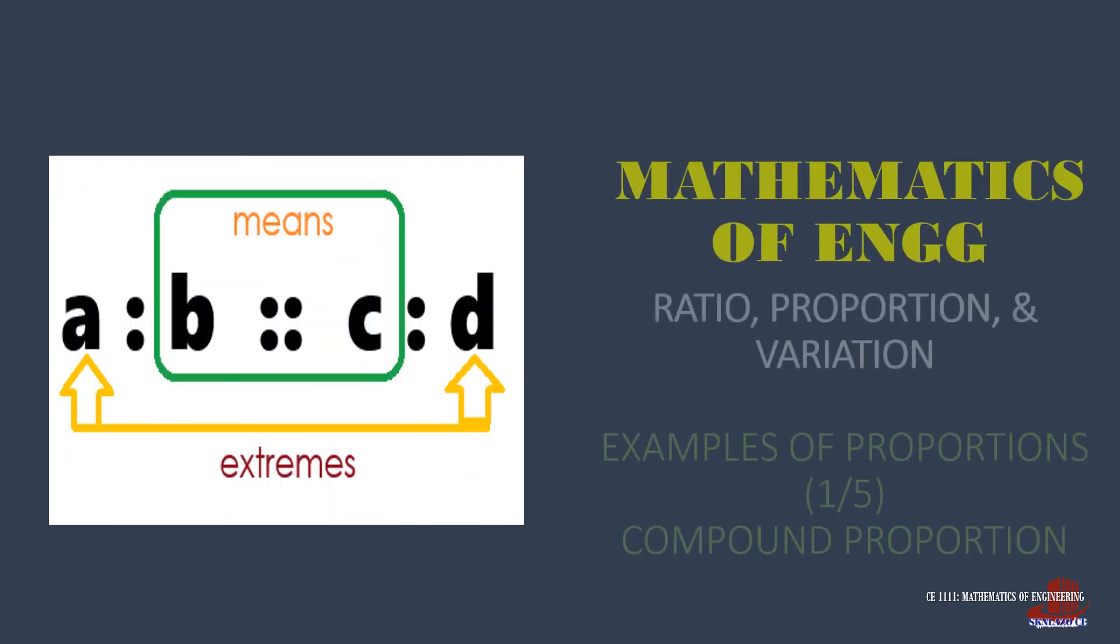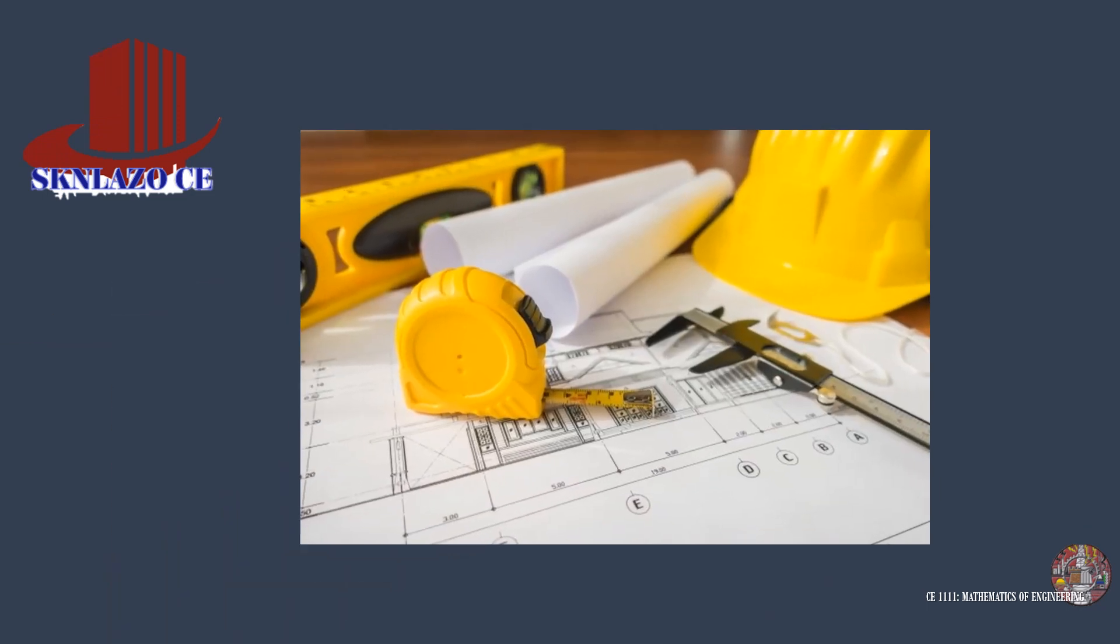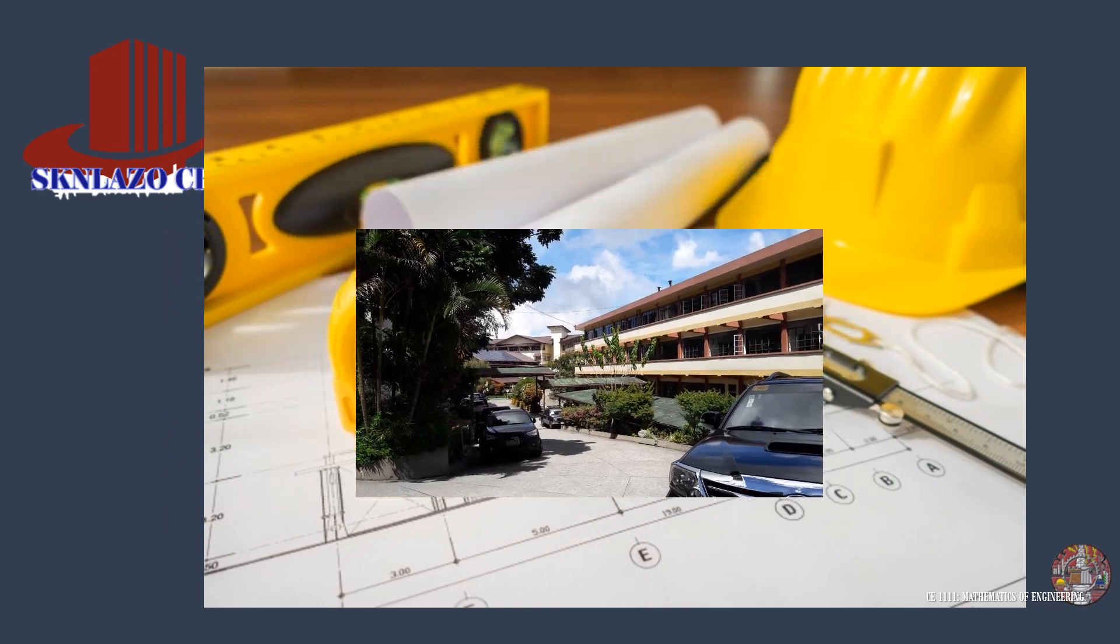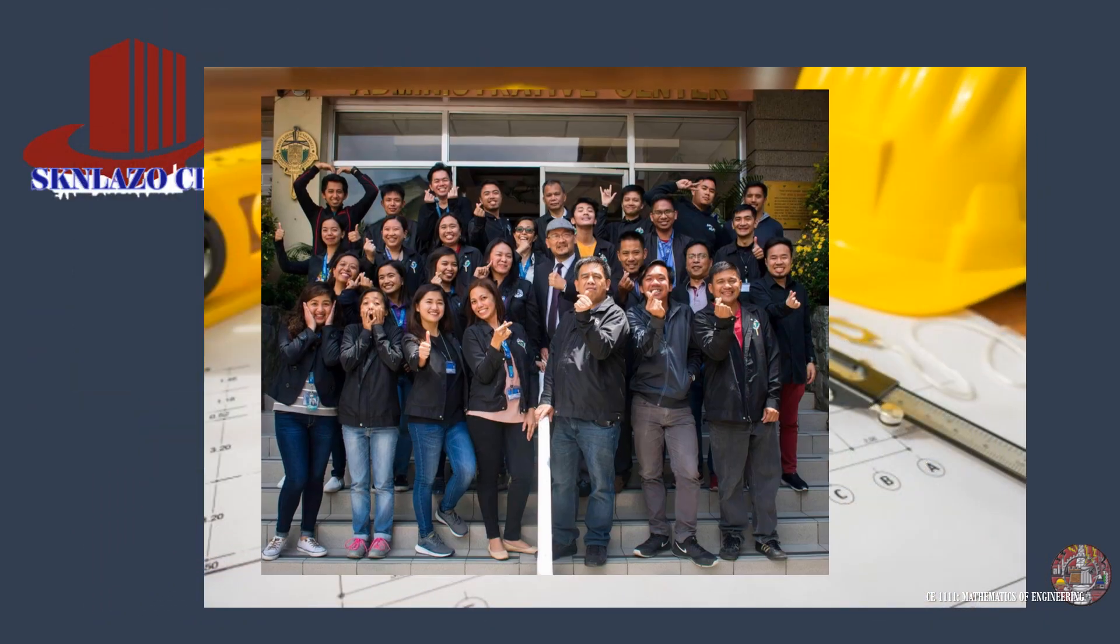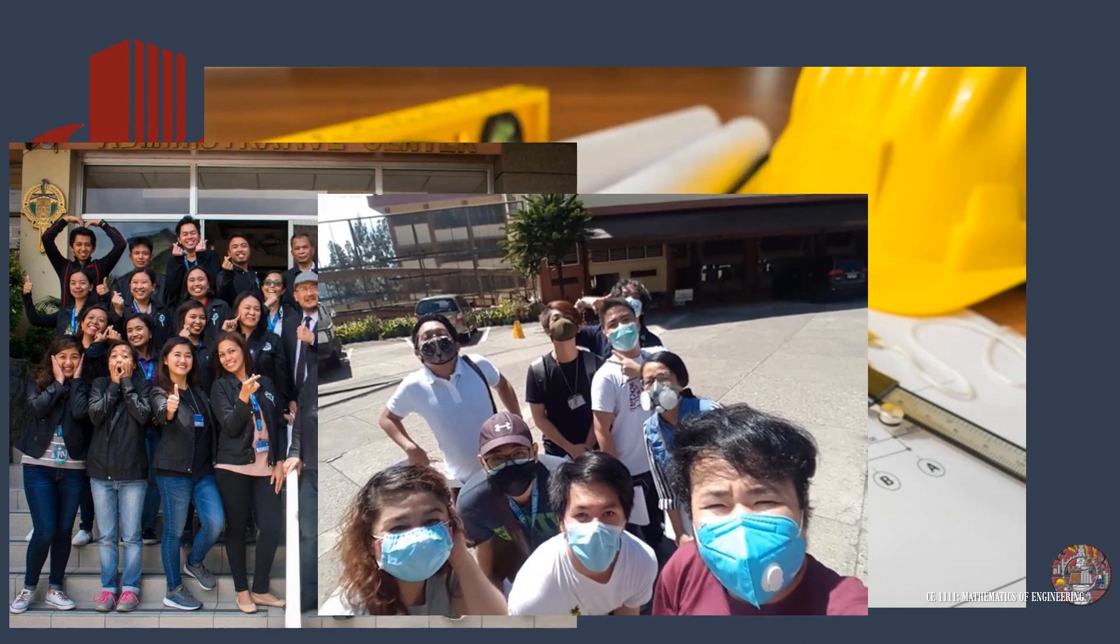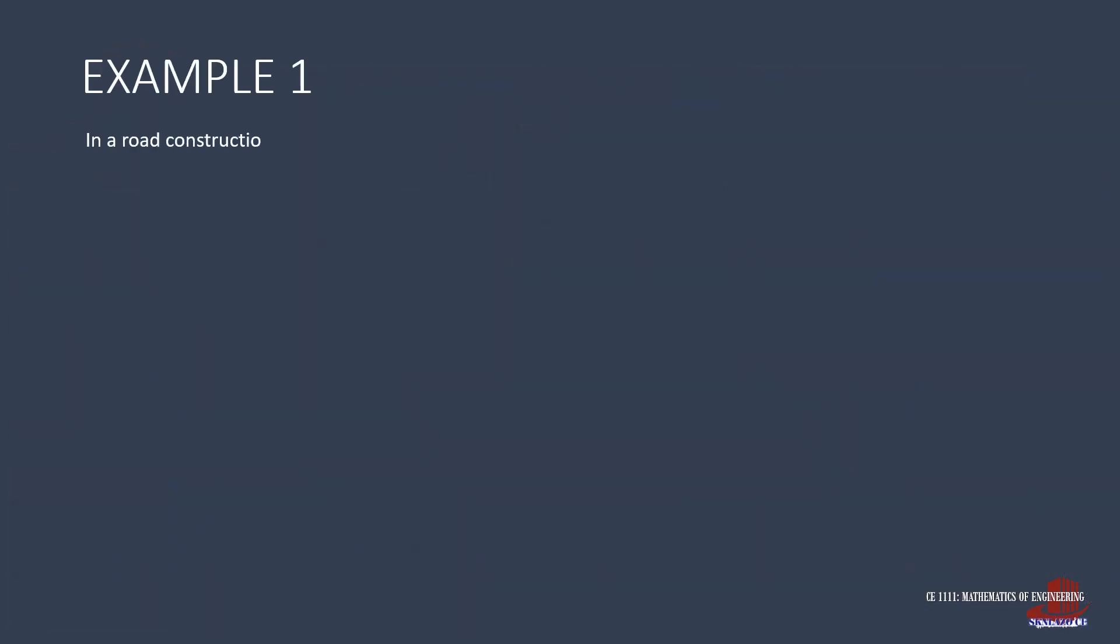From the previous discussion on the types of proportions, check out examples of each, starting with compound proportion. Welcome to Mathematics of Engineering. In this video, examples for compound proportion are solved using the equations presented in the previous video. The first example states: In a road construction, 200 men working 10 hours a day can finish the project in 27 days. How many men must be employed to complete the job in 15 days if they work longer at 12 hours a day?